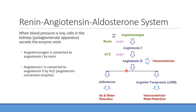Angiotensin 2 is the main player in the RAAS — it's a potent vasoconstrictor, increasing afterload. If angiotensin 2 is elevated, total peripheral resistance goes up, afterload increases, and stroke volume decreases. It also stimulates aldosterone release — increasing blood volume and preload — and releases ADH (arginine vasopressin), which causes vasoconstriction and water retention. So angiotensin 2 increases both preload and afterload.